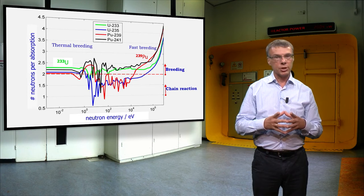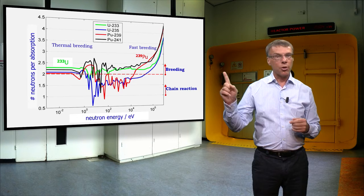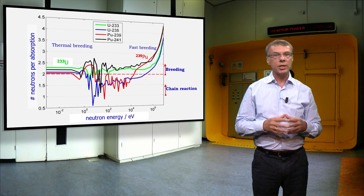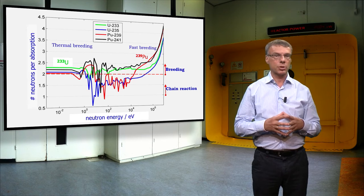As you can see, this parameter is strongly dependent on energy. If the neutron initiating a new fission is thermal, the thorium-fuel cycle is most beneficial. While in the fast energy range, the uranium-plutonium-fuel cycle has preference. In that range, the plutonium isotopes give considerably more neutrons per fission than the uranium isotopes.